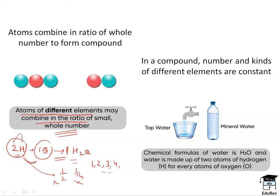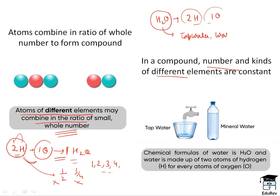The next postulate was: in a compound, the number and kinds of different elements are constant. For example, the chemical formula of water is H₂O, and water is always made up of two atoms of hydrogen for every one atom of oxygen. The chemical formula of water will always remain H₂O. This was the sixth postulate of John Dalton.